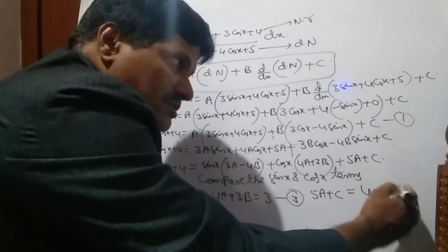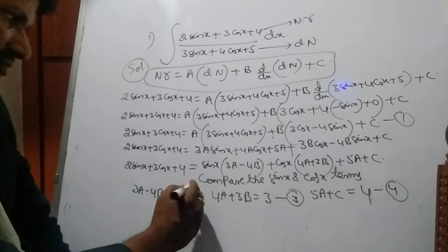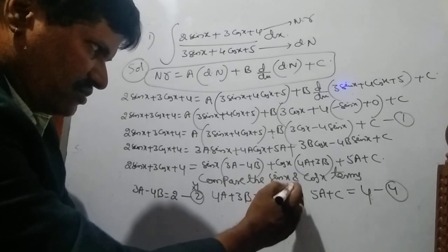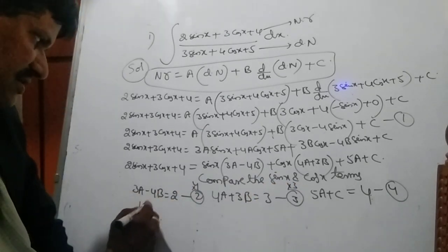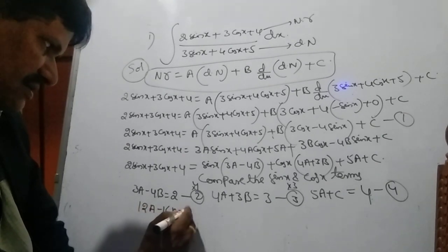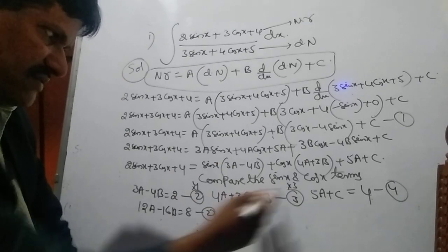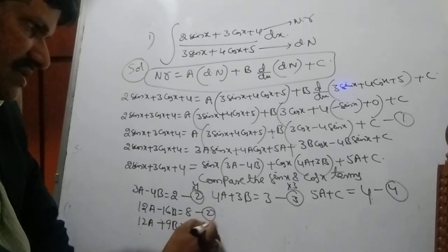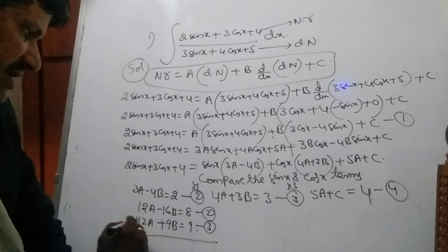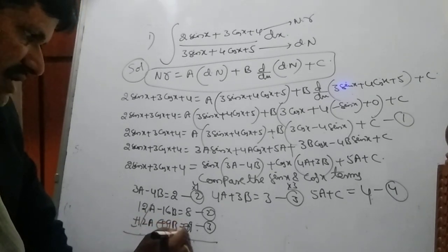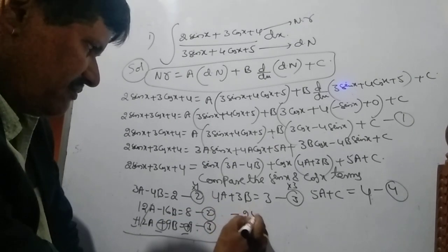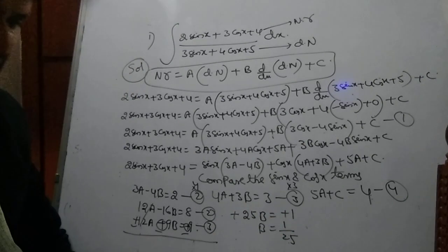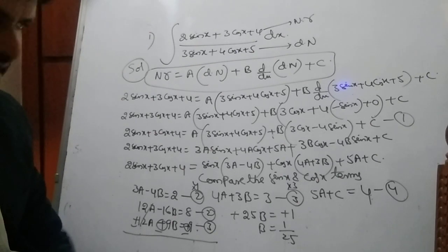To solve equations 2 and 3, multiply equation 2 by 4: 12a − 16b = 8, and equation 3 by 3: 12a + 9b = 9. Subtracting: −25b = −1, so b = 1/25.